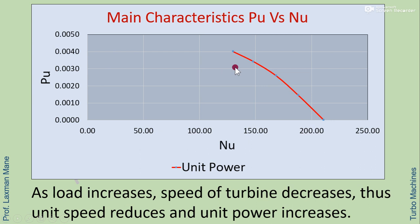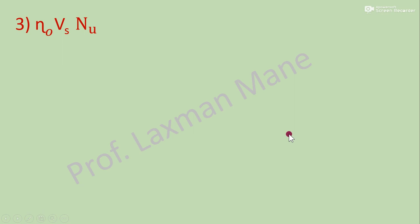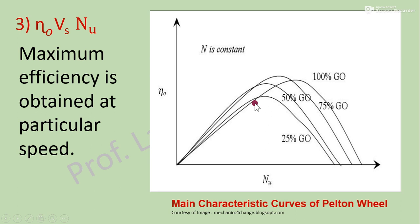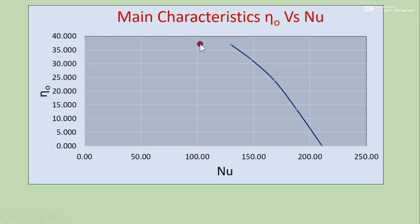From the actual graph for unit power versus unit speed: as load on the turbine increases from 1 kg, 2 kg, 3 kg to 4 kg, the speed of the turbine decreases and thus unit speed decreases, while unit power increases. The third category of curves is overall efficiency versus unit speed for different gate openings.